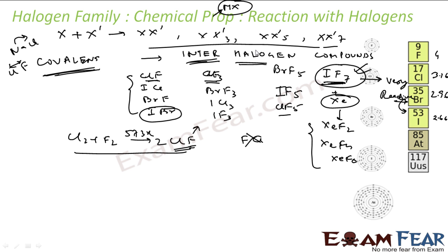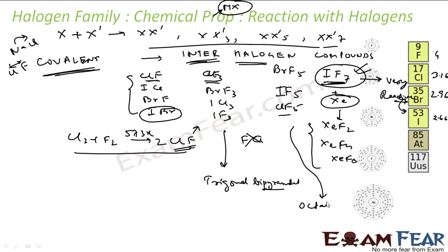Interhalogen compounds are more reactive than their parent compounds. Regarding shape: the XX3 form has trigonal bipyramidal shape, the XX5 form has octahedral shape, and the XX7 form — with only one compound, IF7 — has pentagonal bipyramidal shape.